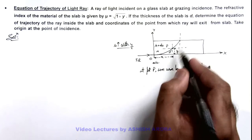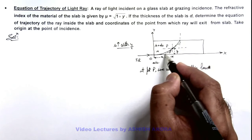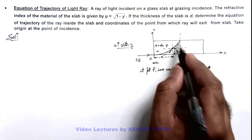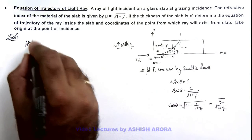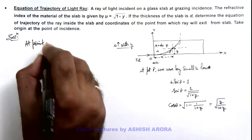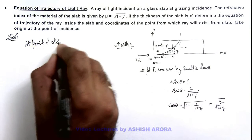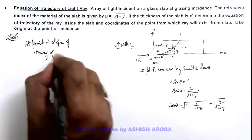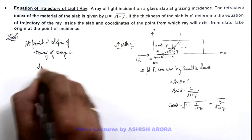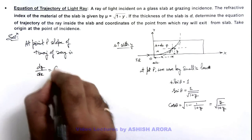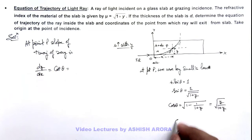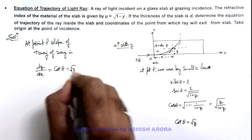And in this situation, if we take the slope of this light ray at this point P on its trajectory, then we can write at point P, slope of trajectory of ray is... here slope dy/dx we can write as cot θ, which is cos θ/sin θ. Here we can see the value of cot θ is √y, so this can be written as √y.